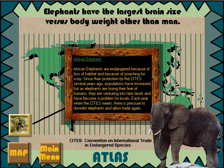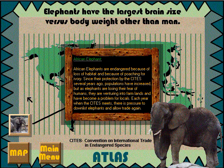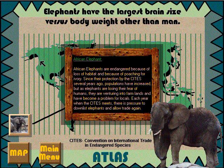African Elephants are in danger because of loss of habitat and because of poaching for ivory. Since their protection by CITES several years ago, populations have increased. But as elephants are losing their fear of humans, they are venturing into farmland and have become a problem for locals. Each year when CITES meets, there is pressure to downlist elephants and allow trade again. Now that you know a little more about the African Elephant, let's click the button again to get back to the nine animal buttons.